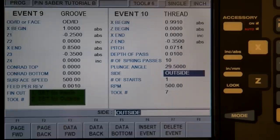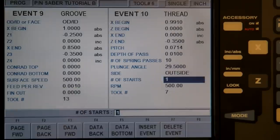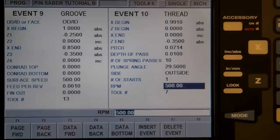Side determines if the threads are interior or exterior. The number of starts is the number of channels that run along the thread. Most threads have a single start, but you can manufacture more if the design calls for them. The RPM should generally be kept low, no higher than 500 RPM while threading.